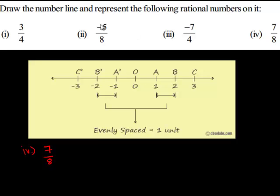Here we have 7 upon 8 which is a positive rational number. So this will lie on the right of the point O.